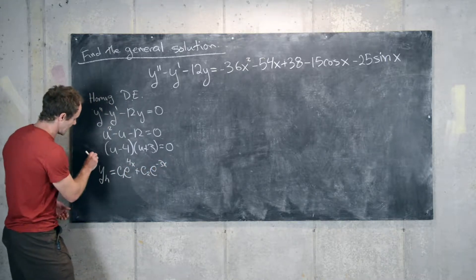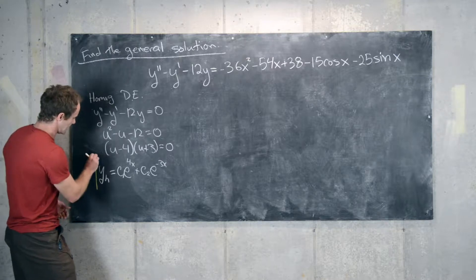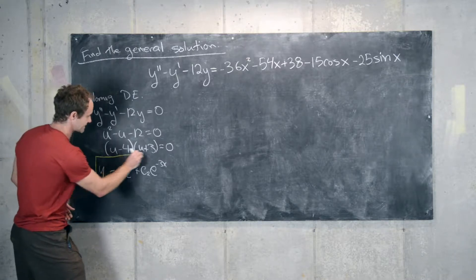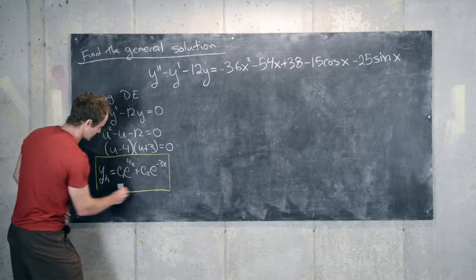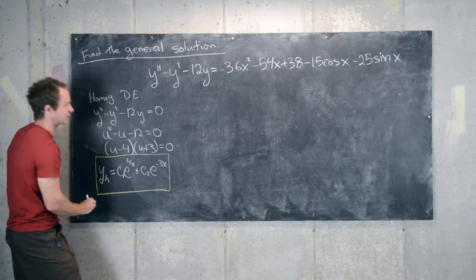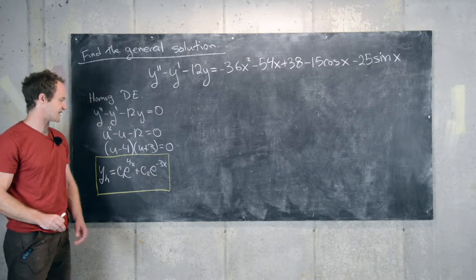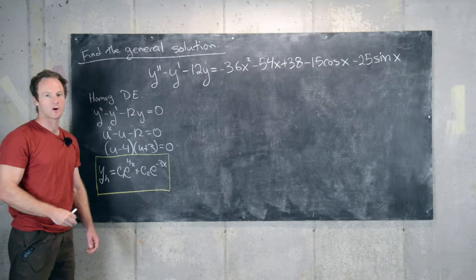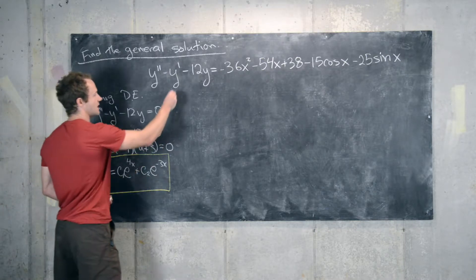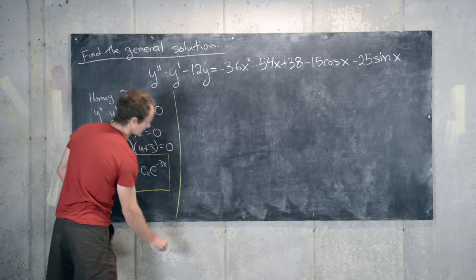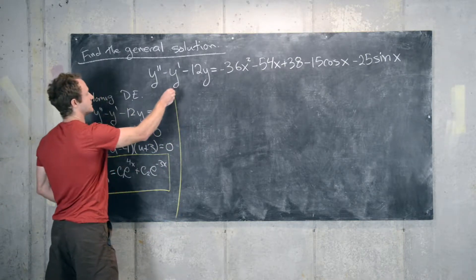That gives us the homogeneous solution y_h equals c1 e to the 4x plus c2 e to the minus 3x. We'll keep this off to the side, because we won't need it for a couple of steps, but we will need it at the very end.